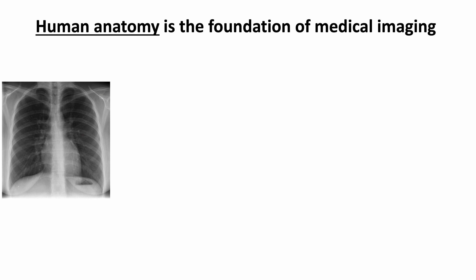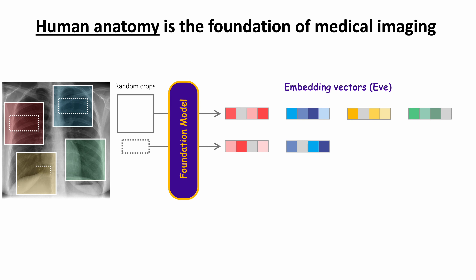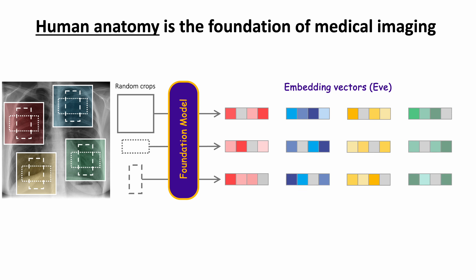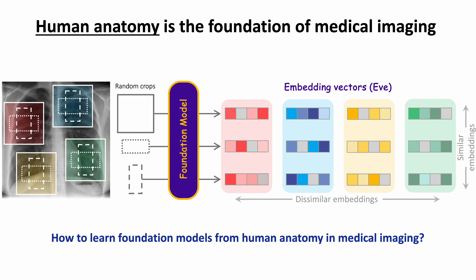The answer is simple: human anatomy. We believe that a self-supervised foundation model in medical imaging must be able to transform each pixel in an image into semantically rich embeddings, where different anatomical structures have different embeddings and the same anatomical structure has nearly identical embeddings across all resolutions and scales across patients. So a fundamental question is: how to learn foundation models from human anatomy in medical imaging?